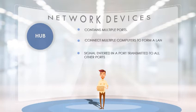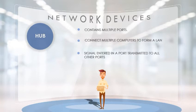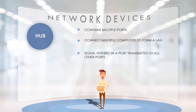In packet switching, data is divided into packets and sent over the network. A hub is used in packet switching. When a packet arrives at one port, it is copied to all other ports in the hub. The destination address in the frame does not change to a broadcast address — it simply copies the data to all nodes connected to the hub. A hub connects multiple computers to form a local area network, but a signal entering one port is transmitted to all other ports.